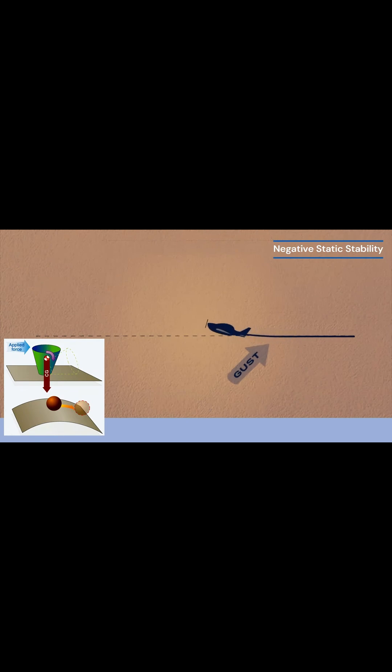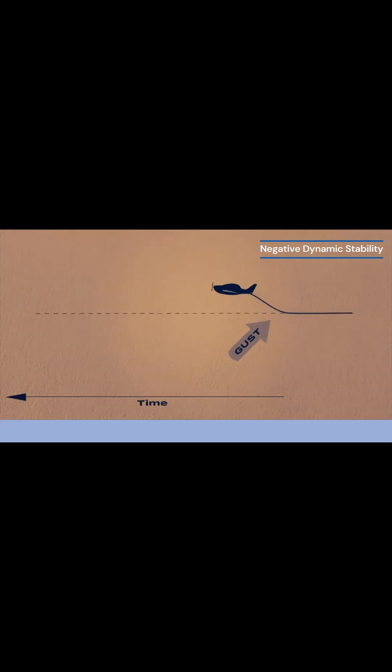Negative stability is a challenge. It means the plane continues to move away from its original position after being disturbed.